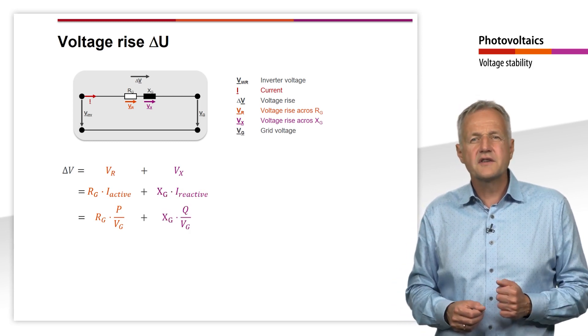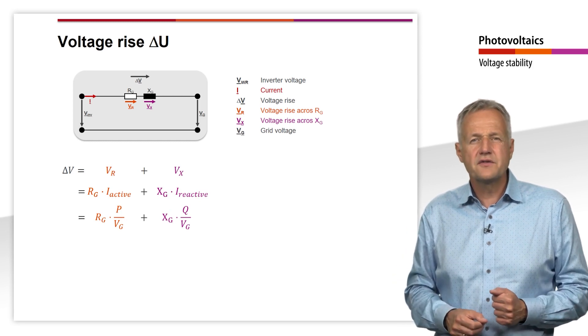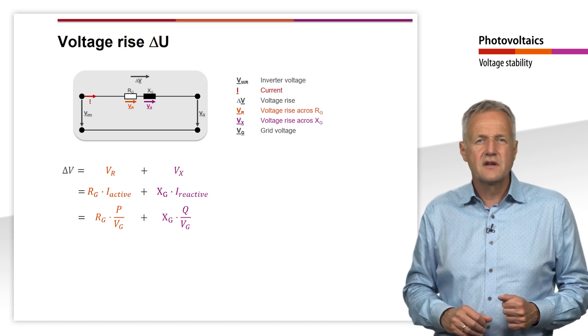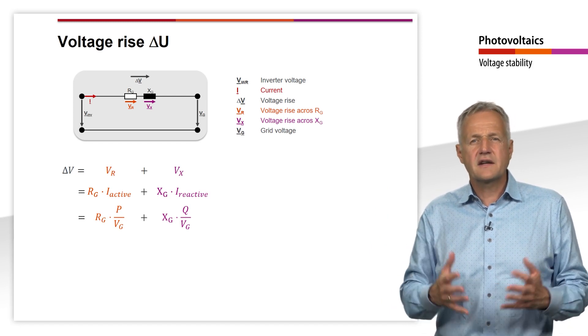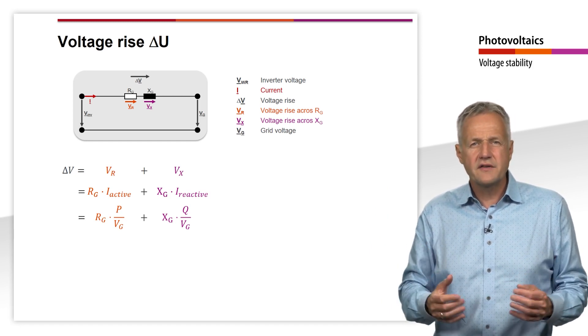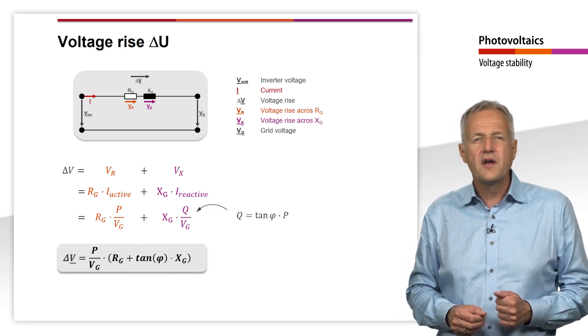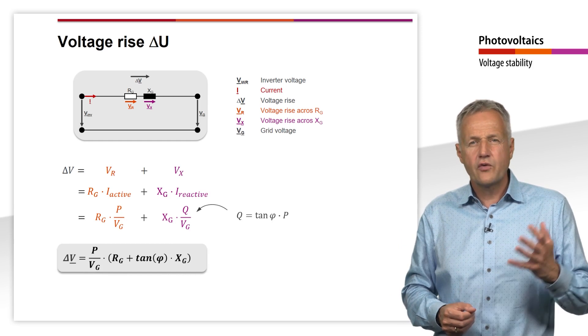As with the active current, the reactive current is equal to the coefficient of the reactive power to the grid voltage. Since reactive and active power are related by the phase angle phi, we can further simplify this term and finally obtain the equation shown here.